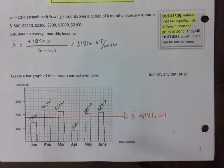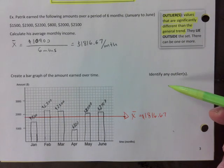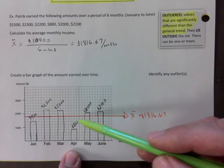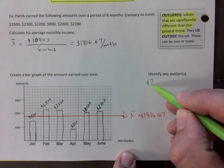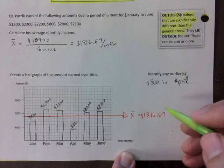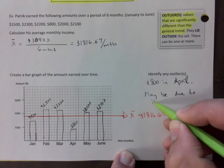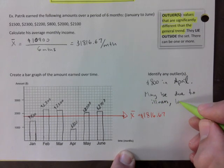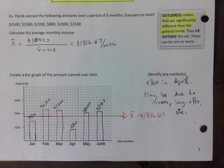The average is kind of what you could expect on a regular basis. Which one would be your outlier in this case — which one is very different than the general trend? Eight hundred dollars in April. Maybe you were sick, maybe due to illness, layoffs, et cetera. Sometimes the province asks you to justify why the outlier is there — for example, a really cold day for temperature data, or in this case $800 because something happened.